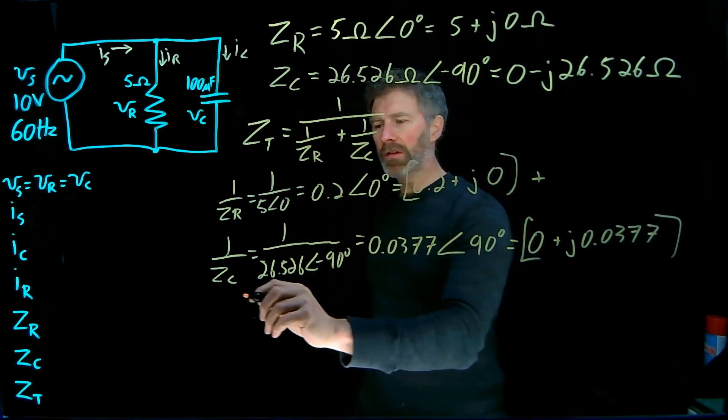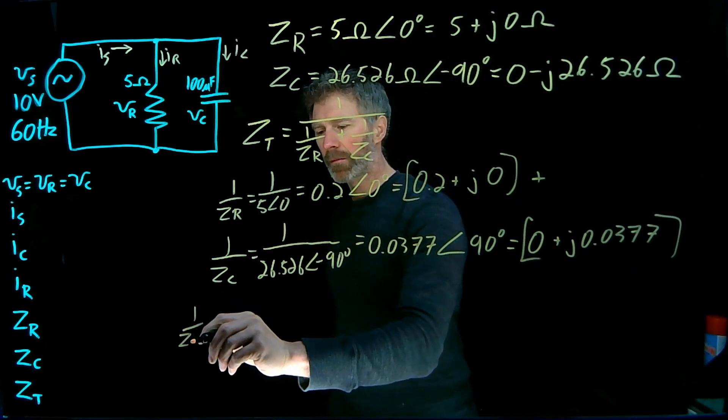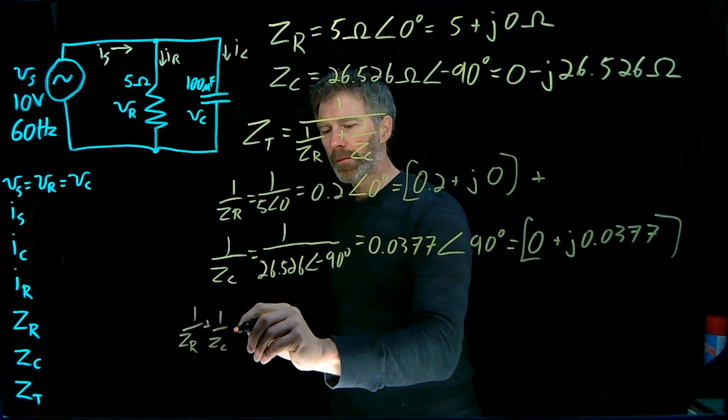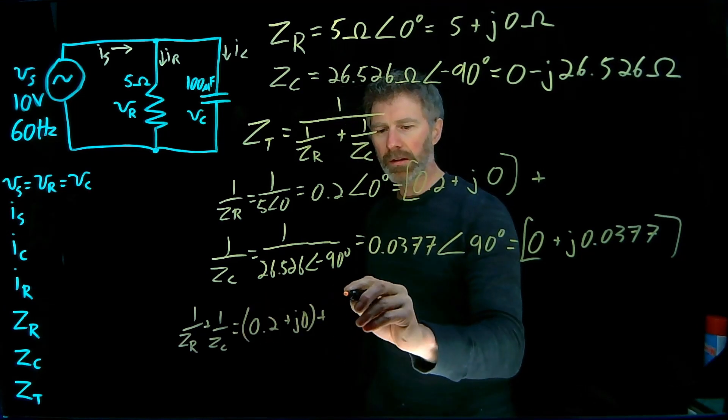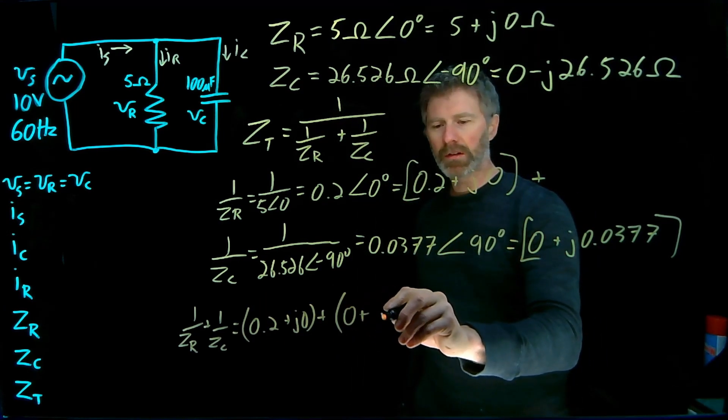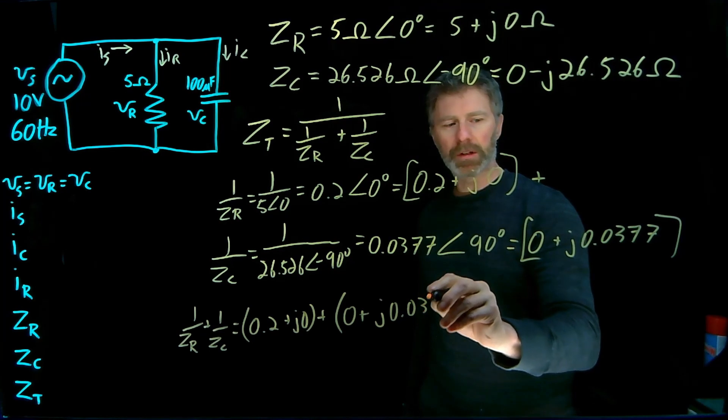So we add that number plus that number. So the denominator part of this equation, 1/ZR + 1/ZC is 0.2 + j0 + 0 + j0.0377.